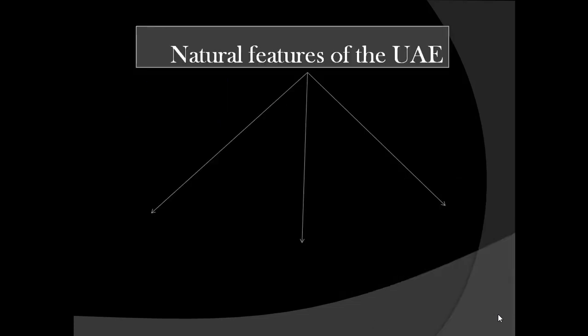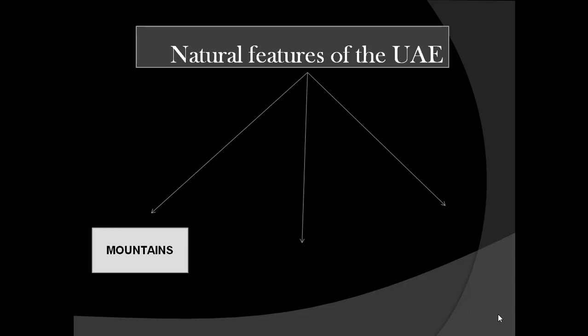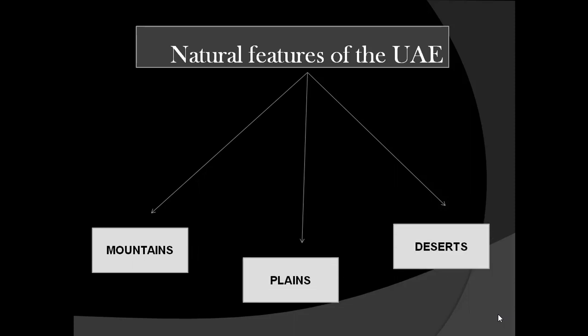The different natural features of the UAE are mountains, plains, and deserts. These are the three different landforms of the UAE. By landforms, we mean the different kinds and types of land that you see around you. When you travel from one emirate to another emirate in the UAE, the land around you is not the same.